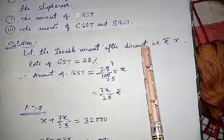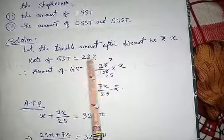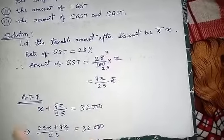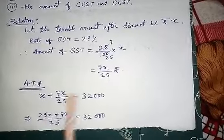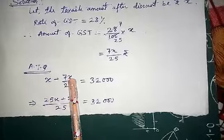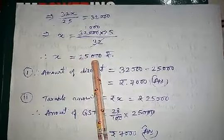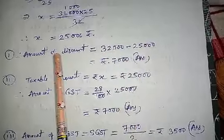Let the taxable amount after discount be Rs. X. GST rate is 28%, so GST = 28/100 × X. Adding taxable amount and GST gives the final price: X + 28X/100 = 32,000. Solving using LCM, we get X = Rs. 25,000. So the taxable amount (selling price after discount) is Rs. 25,000. The original price was Rs. 32,000, so the discount = 32,000 − 25,000 = Rs. 7,000.